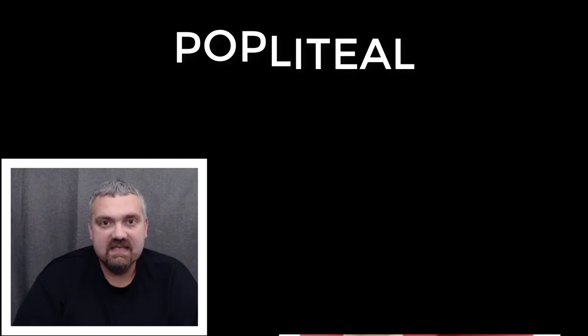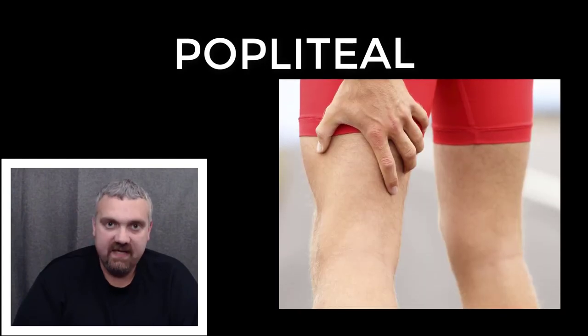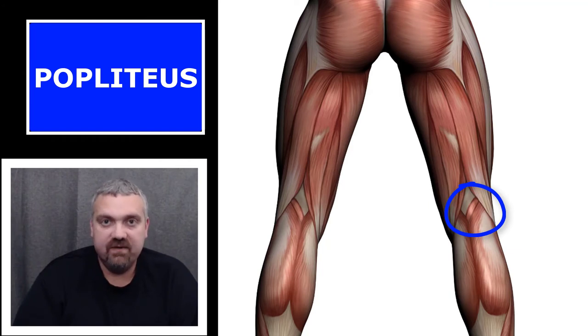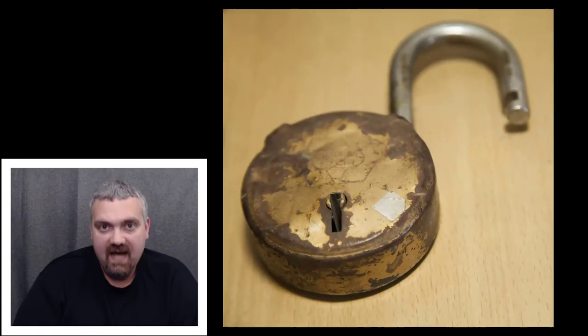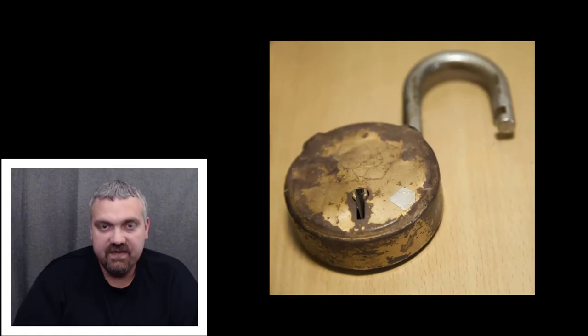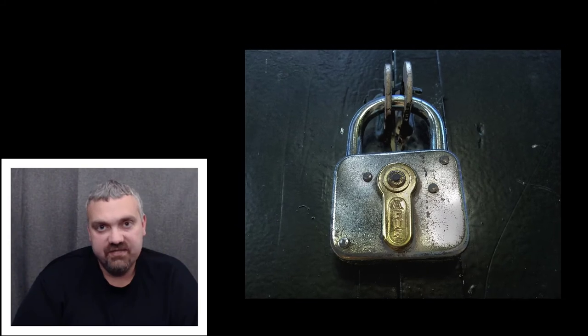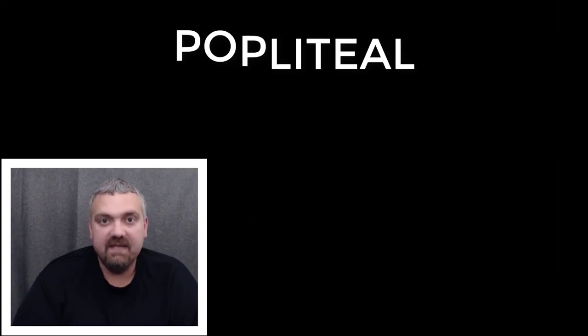Popliteal or popliteus means behind the knee. The popliteus muscle is a small muscle behind the knee. It doesn't generate a lot of force or play a major role in bending or straightening your knee, but it does unlock the knee so that it can bend, and then locks the knee once it's straightened.